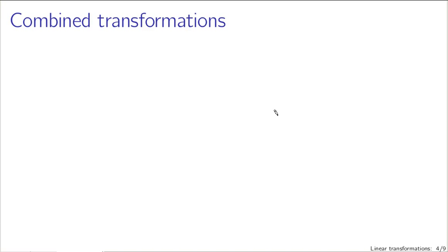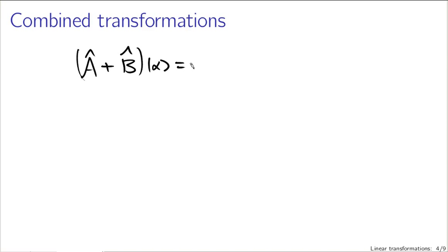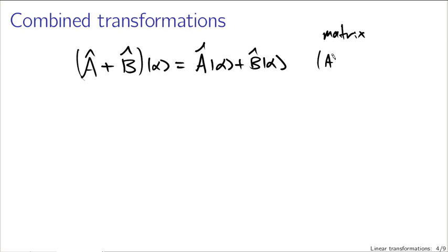Transformations can also be combined with each other. You can have a transformation A-hat added to a transformation B-hat — this, applied to a vector alpha, is just A-hat applied to alpha plus B-hat applied to alpha. Working with matrices, the ijth entry of the matrix representing the sum of two transformations is just A_{ij} plus B_{ij}: the element-by-element sum of the two matrices.